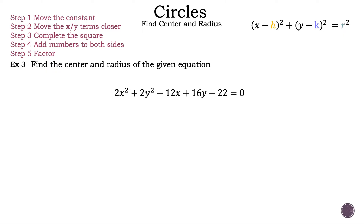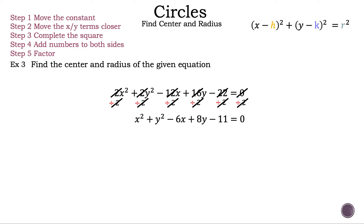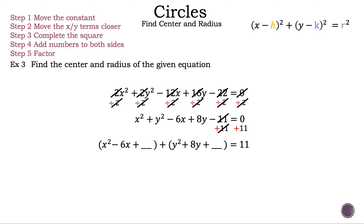Since we have an equation and not an expression, we can divide each number by 2. If you can't do this step, it is a bit more interesting and that's for another video. After canceling, we have x squared plus y squared minus 6x plus 8y minus 11 is equal to 0 — something that looks like example 1 or example 2. Let's move that constant negative 11 to the other side: add 11 to both sides. We have also moved the xy terms closer together and put parentheses around them so we can see what is happening a little easier.